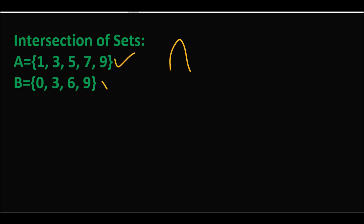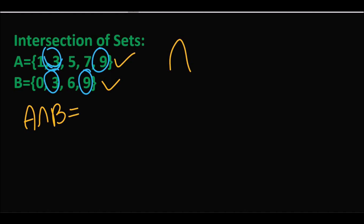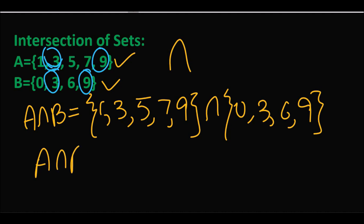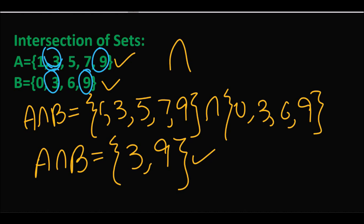یہاں پر دو sets موجود ہیں، set A اور set B۔ اگر ہم انہیں غور سے دیکھیں تو دونوں sets میں common elements موجود ہیں۔ پہلا element ہے three اور دوسرا element ہے nine۔ اگر ہم اس set کا intersection لینا چاہیں تو ہم لکھتے ہیں: A intersection B — set A کے elements {1, 3, 5, 7, 9} intersection set B {0, 3, 6, 9}۔ Common elements یعنی {3, 9} ہمارا intersection ہے۔